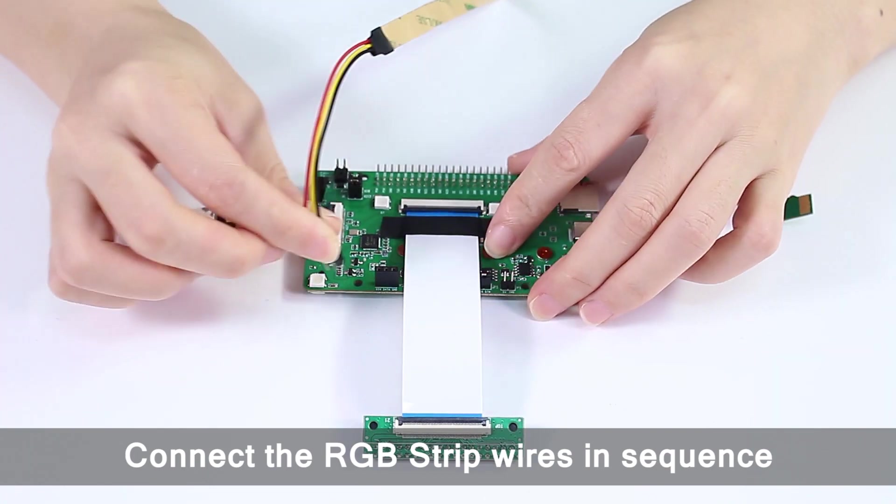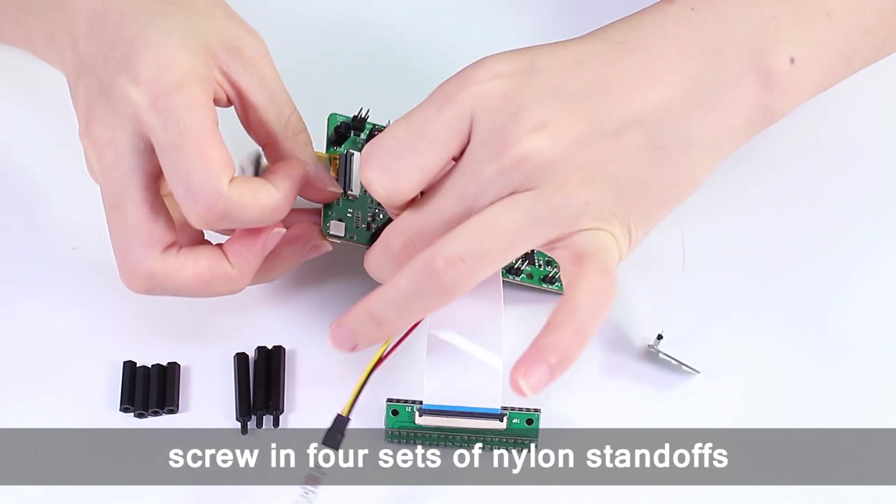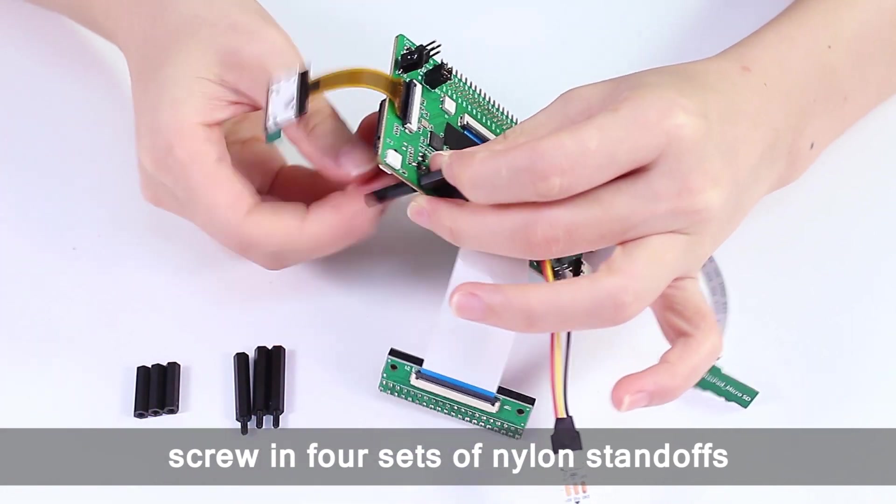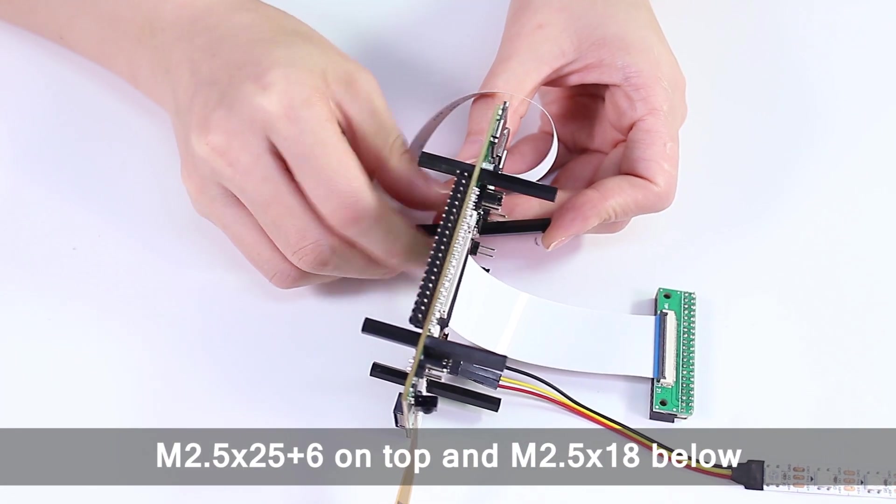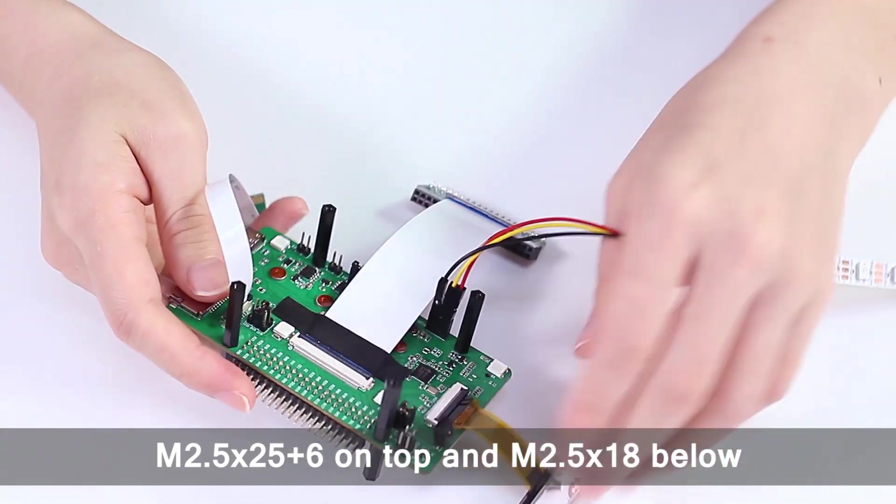Connect the RGB strip wires in sequence. On the main board, screw in four sets of nylon standoffs, M2.5x25x6 on top and M2.5x18 below.